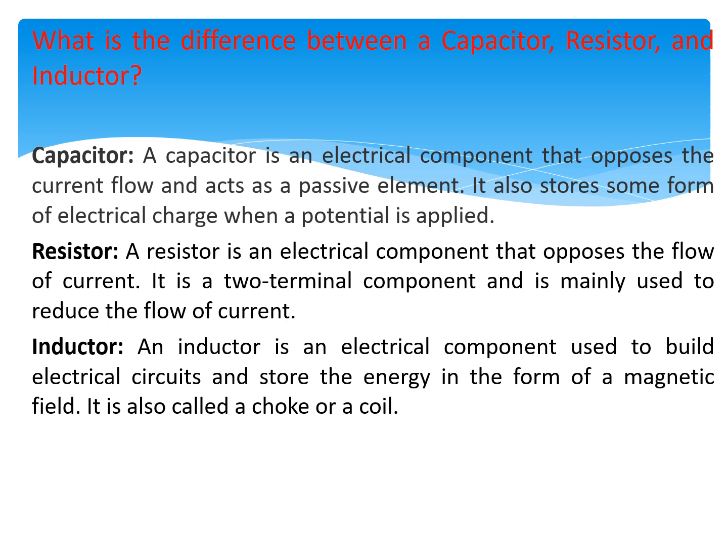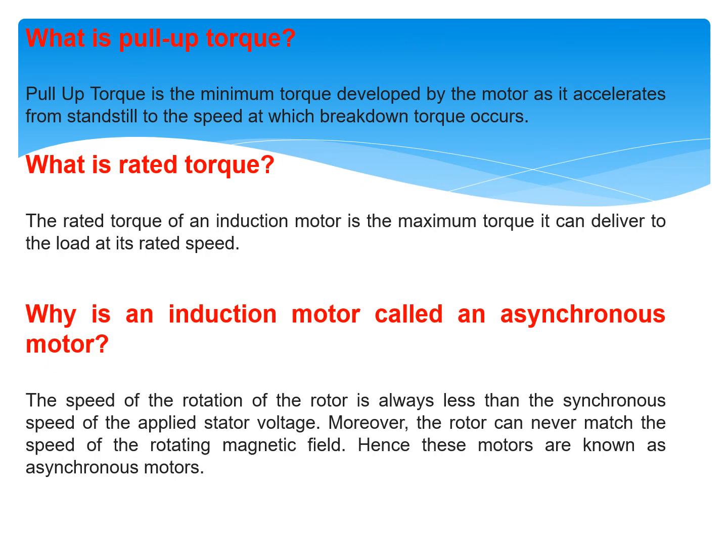What is pull-up torque? Pull-up torque is the minimum torque developed by the motor as it accelerates from standstill to the speed at which breakdown torque occurs. What is rated torque? The rated torque of an induction motor is the maximum torque it can deliver to the load at its rated speed.